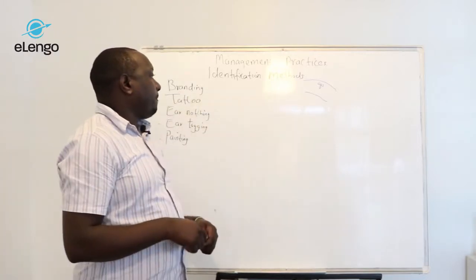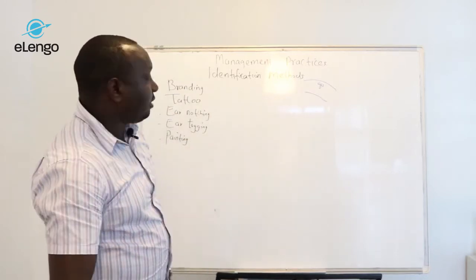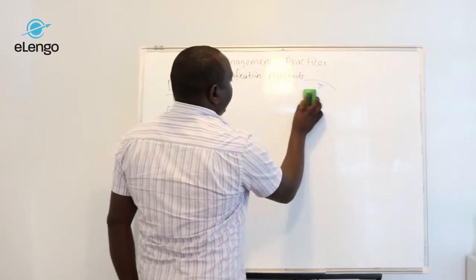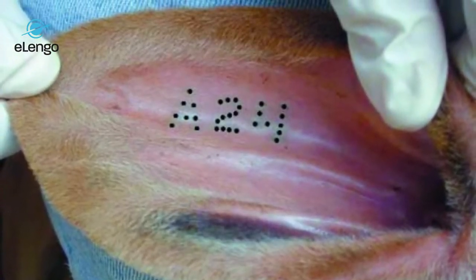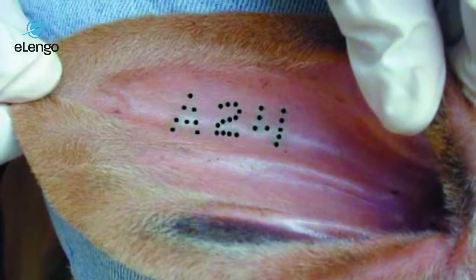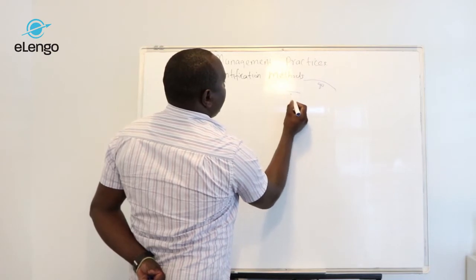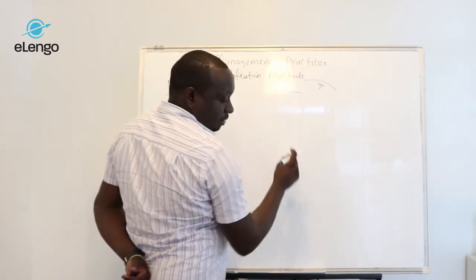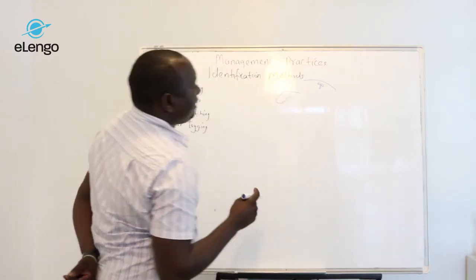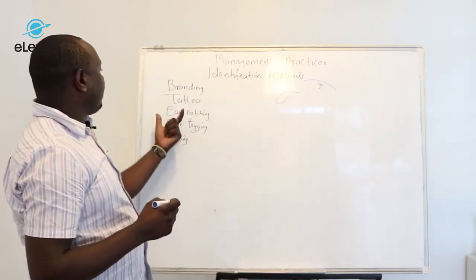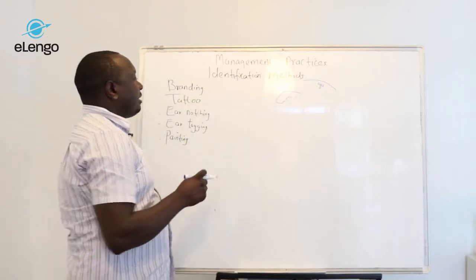That is branding. The other identification method is tattooing, whereby a mark is written on the animal's skin. For example, if this is the head of the animal, a farmer might decide to give this particular animal a number.